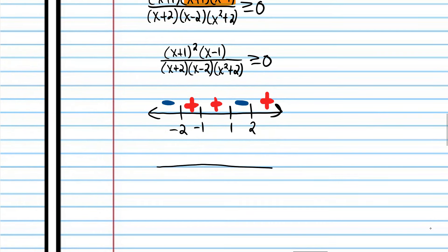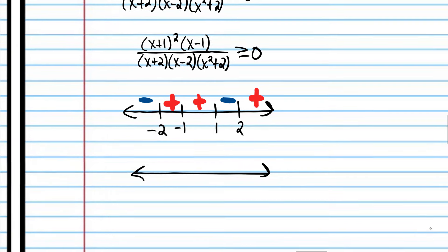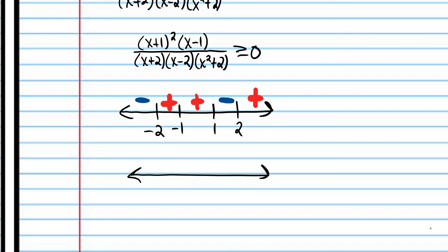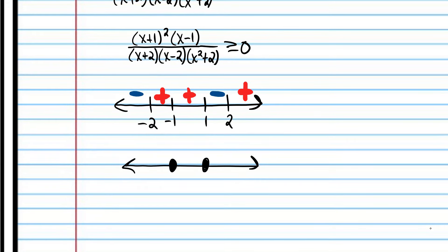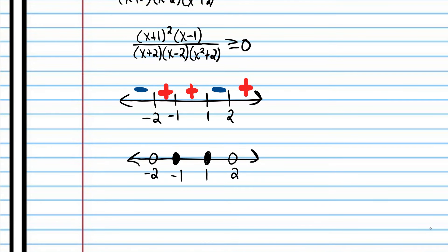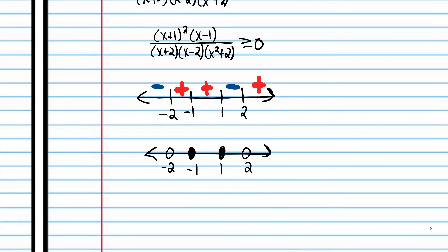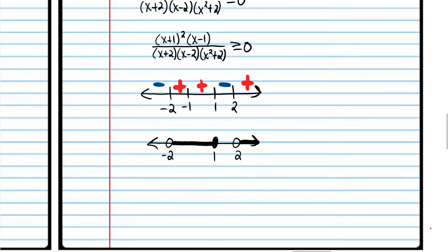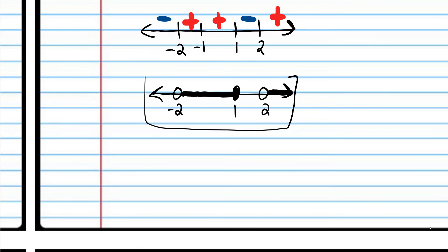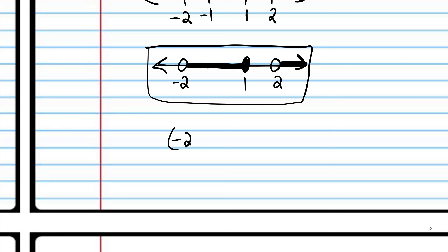Now we're going to write the graphical solution. One and negative one are values that make the expression zero, and because it says greater than or equal to, we draw closed dots. For two and negative two, we draw open dots because those make the expression undefined. We want to know where this expression is greater than zero — that's this region and this region. We actually don't need to write the yellow negative one separately. Let's write the solution in interval notation, being careful to use parentheses and brackets correctly.